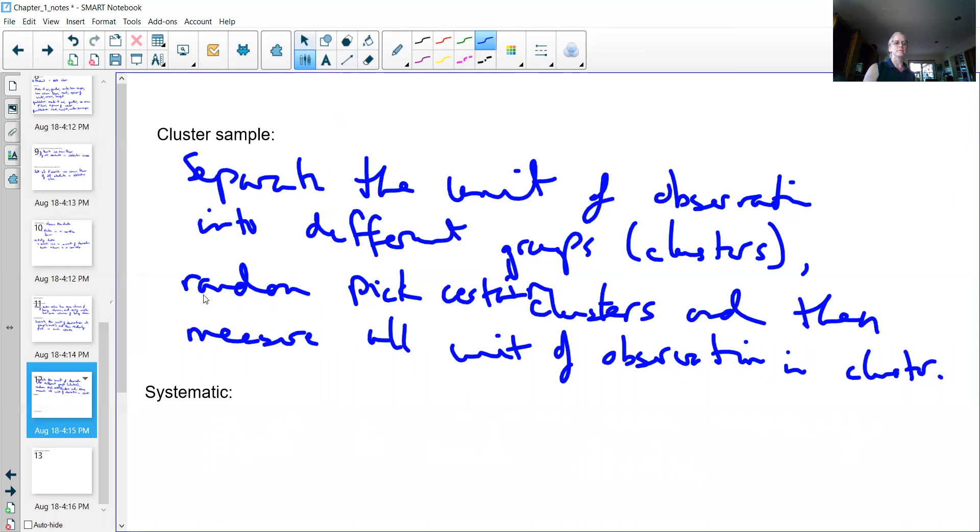Where we see this mostly is when we're doing things in a town. We might take a town, put a grid on it, and then separate based on that grid. Then I would randomly choose certain ones of these clusters, so each one of these squares is a cluster. Maybe I'd randomly select three clusters and then go inside each of those clusters and measure every single unit of observation in that cluster. This is useful because you can go into a town and then go door to door in that neighborhood and ask everybody your survey questions.